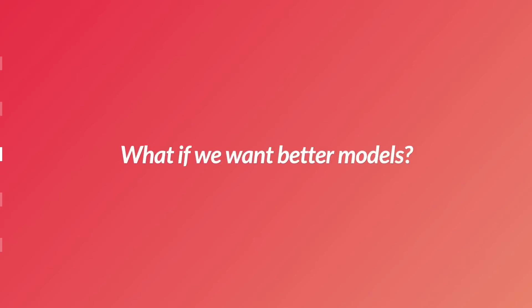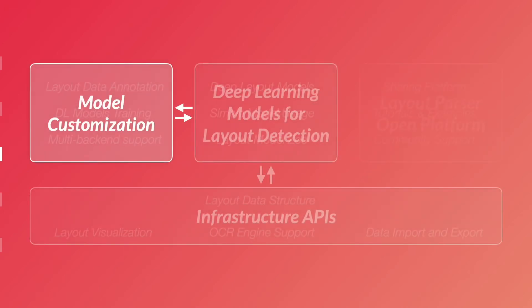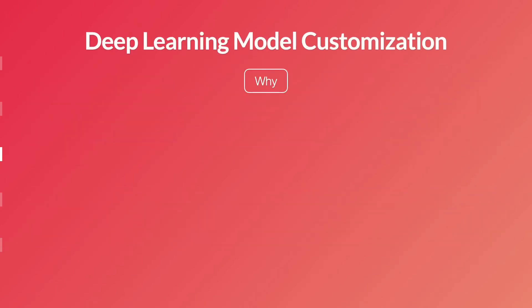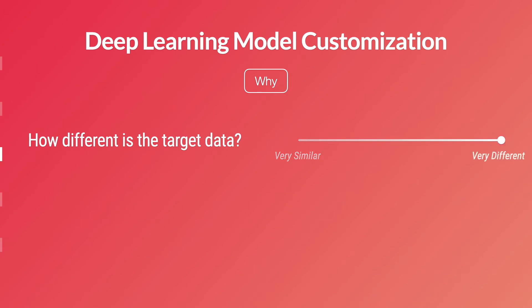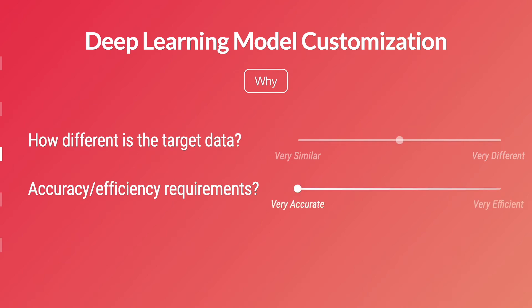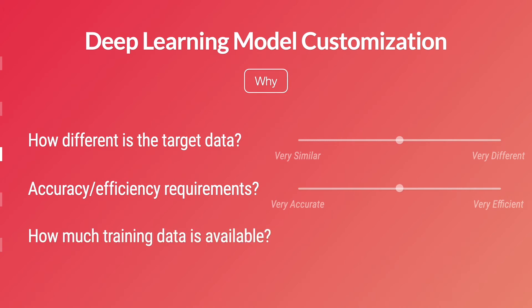What if the models are not perfect and cannot fulfill our demands? Layout Parser supports different levels of model customization. There are several key factors that influence how we should perform model customization: the target data might be similar or very different from the training data, reducing detection accuracy. Additionally, we might have different accuracy or efficiency requirements — for example, when performing DIA at scale, we prefer better efficiency even at a small cost of accuracy. The availability of training data also matters.